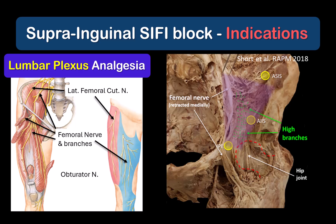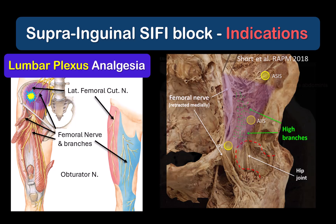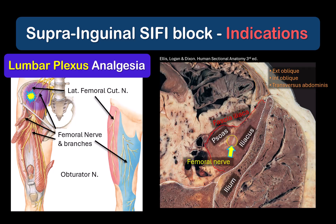To briefly recap the principles of a suprainguinal sci-fi block: the aim is to block the branches of the lumbar plexus, especially those that innervate the hip joint, by injecting under the fascia covering the iliacus muscle — the fascia iliaca. The branches of the lumbar plexus traverse the psoas and iliacus muscles as they descend towards the lower limb. Local anesthetic injected deep to fascia iliaca will reach these branches by spreading in fascial and intermuscular planes.